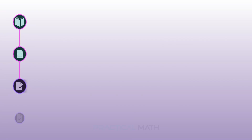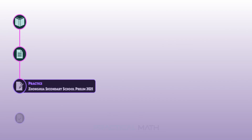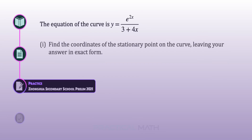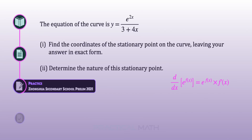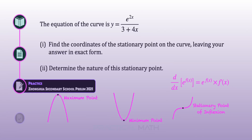Let's try another similar question on applications of differentiation involving stationary points. The equation of the curve is y equals e to the power of 2x divided by (3 plus 4x). In Part 1, find the coordinates of the stationary point. In Part 2, determine the nature of this stationary point. This question is from Zhonghua Secondary School Preliminary Examination 2021 for GCE O-Level Additional Mathematics. Pause to give it a try, and when you are ready, keep watching.